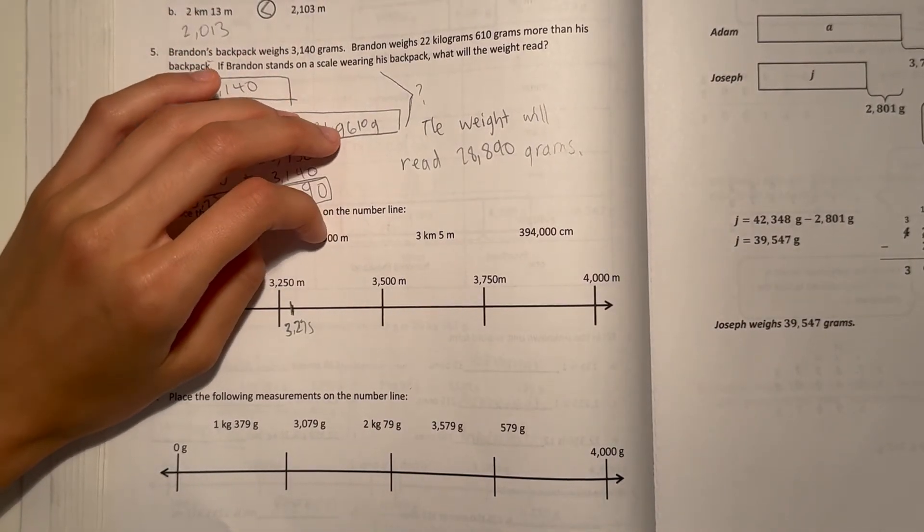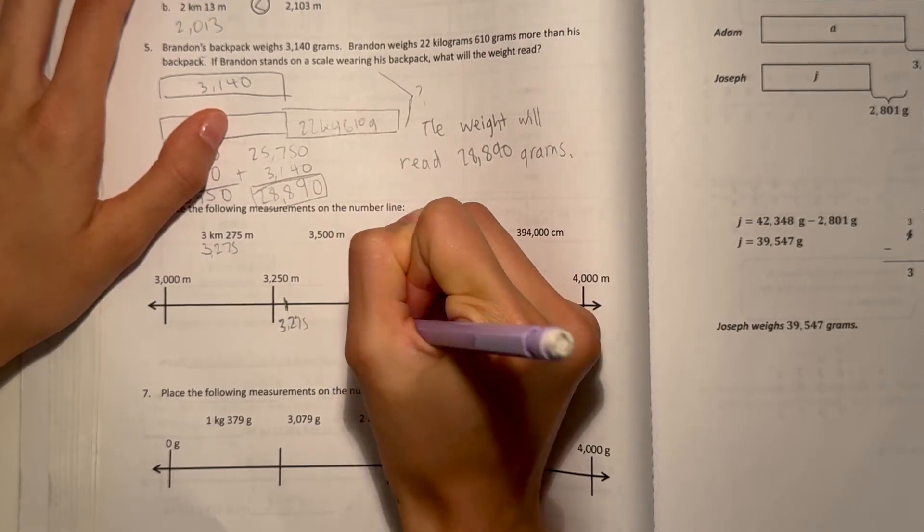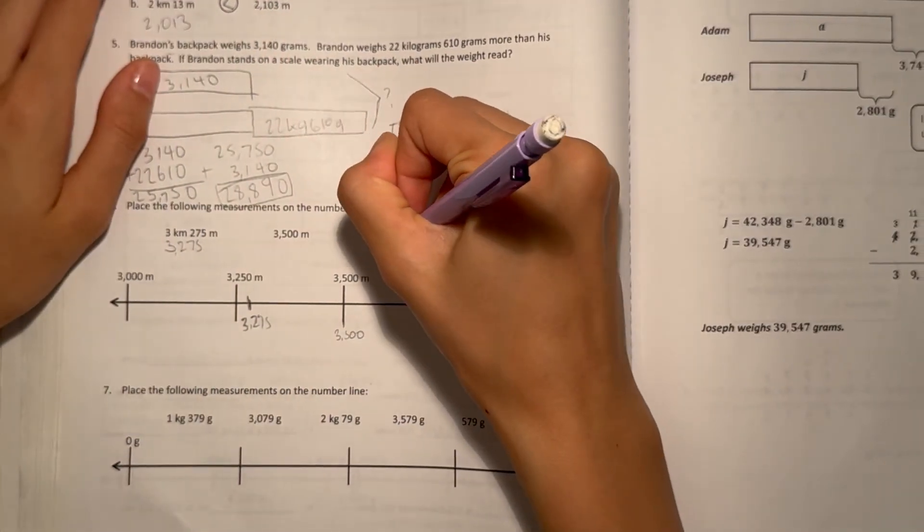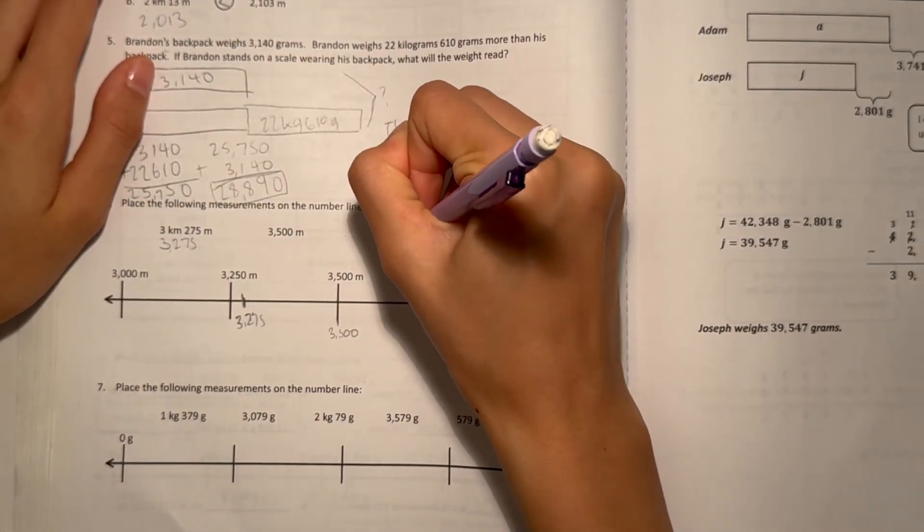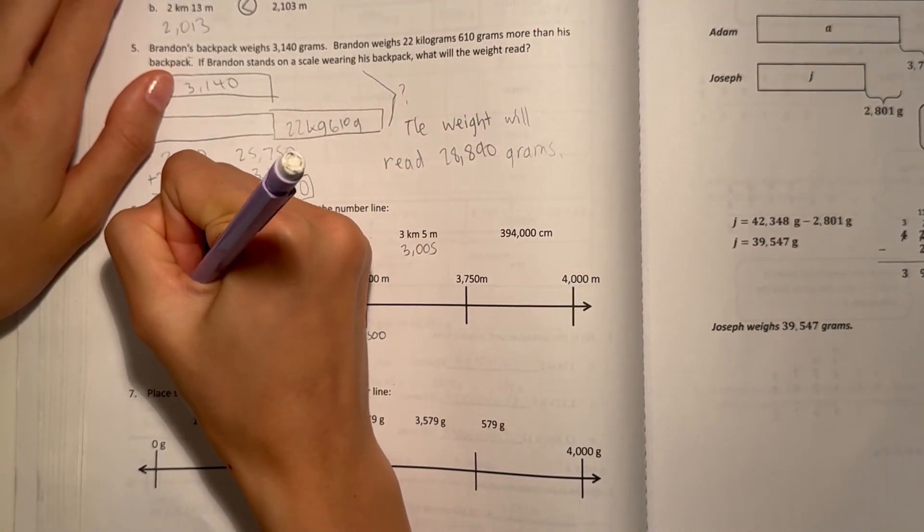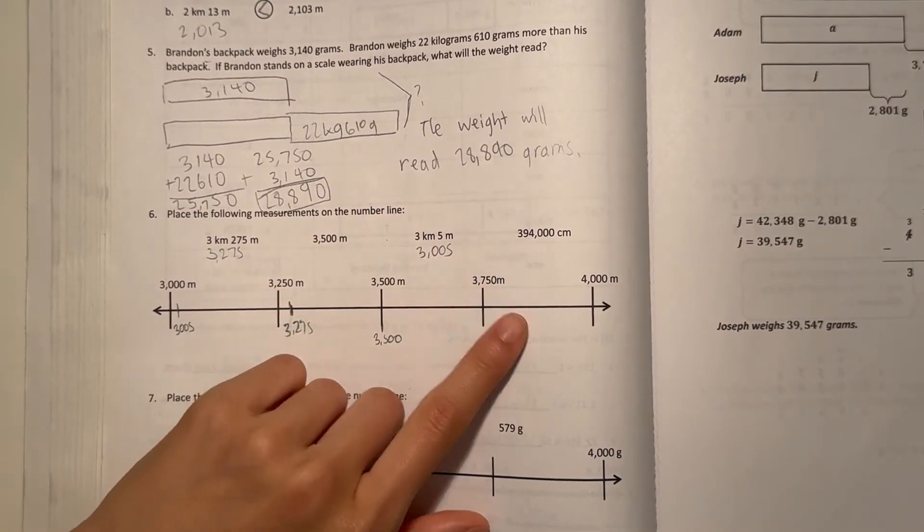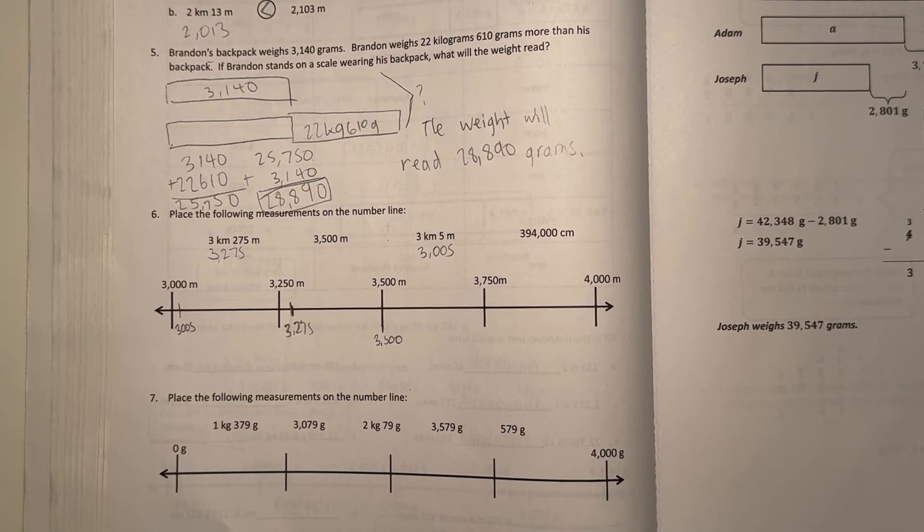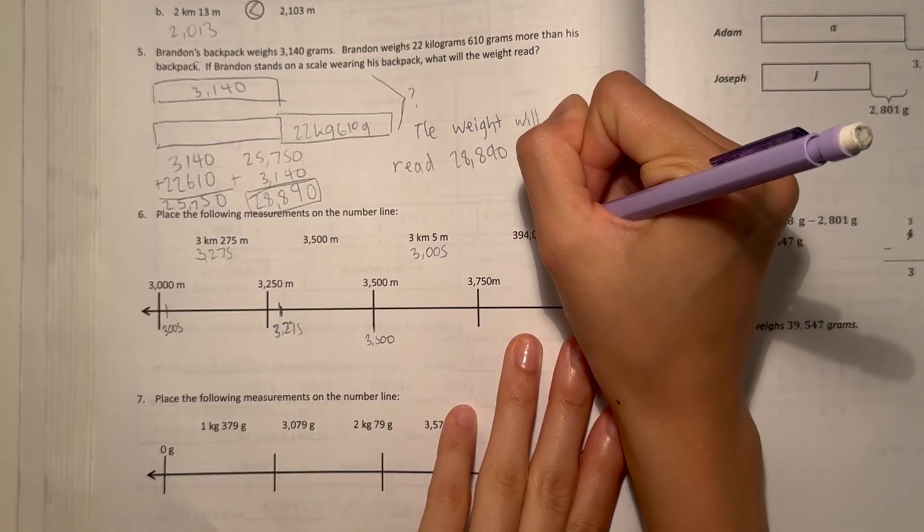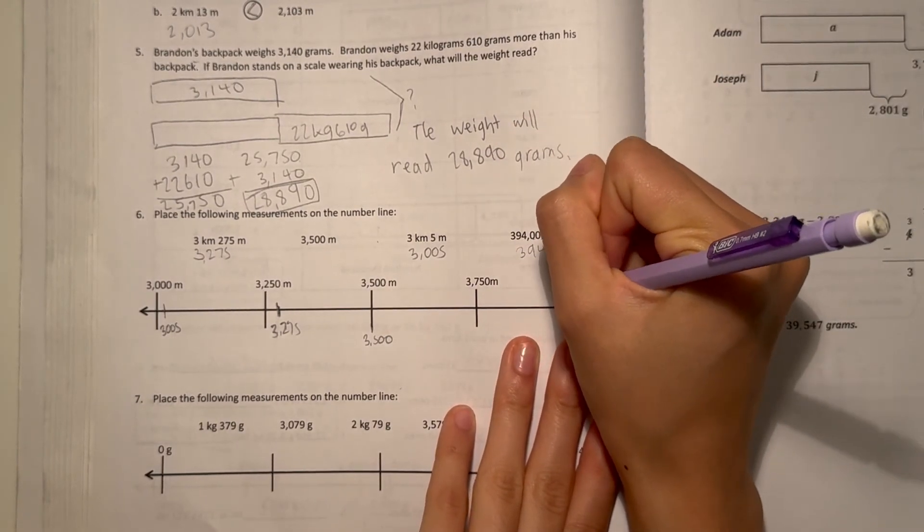And 3,500 meters, that's exactly here. 3 kilometers, 5 meters, that's 3 times 1,000, 3,000 and 5 meters is already in meters form. 3,005 would be just over here. Alright, and 394,000 centimeters. If we're converting up to meters, we know there's 100 centimeters in a meter. So divide by 100, that's 3,940, which would go around over here.